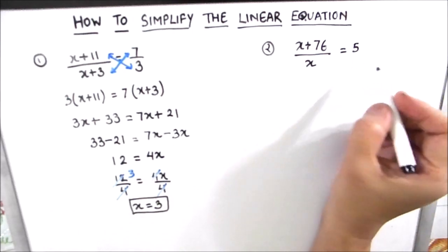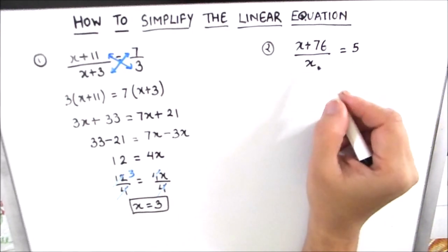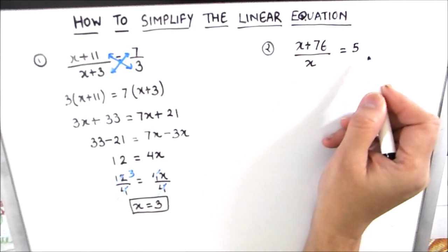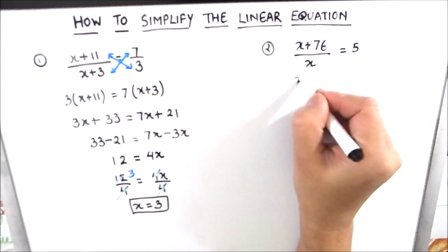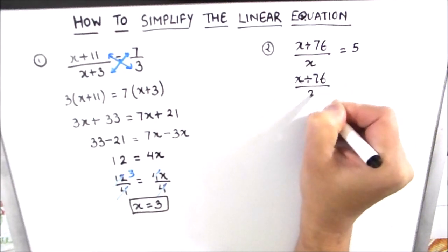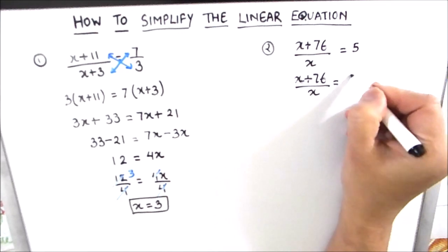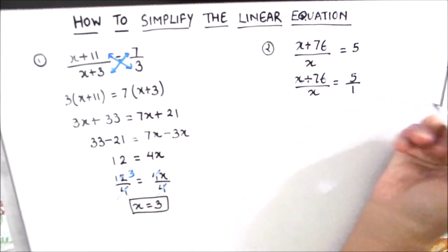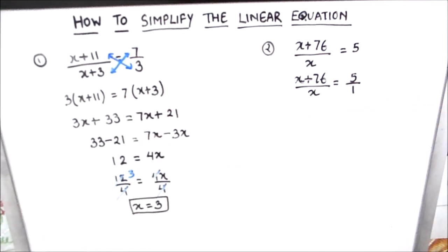Here we have (x+76)/x = 5, so we can rewrite the equation as (x+76)/x is equal to 5/1. Now we can use the cross multiplication method to simplify the equation.